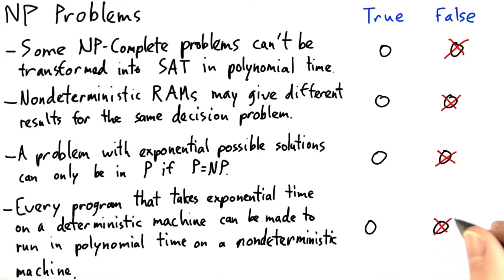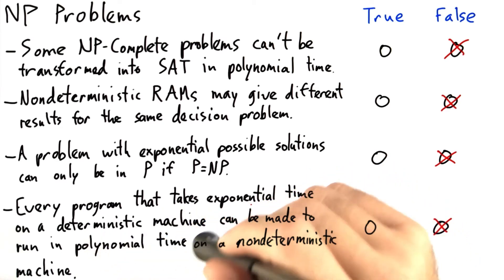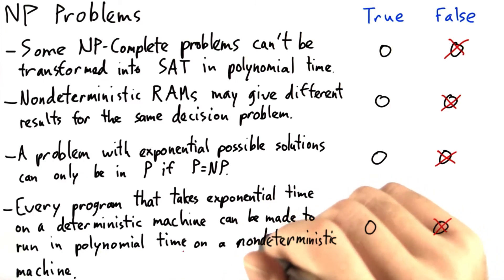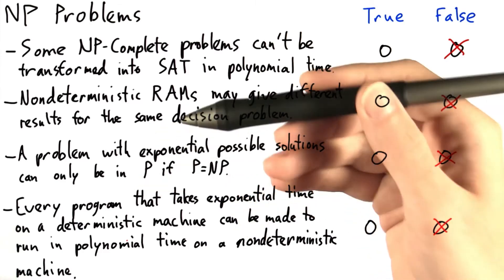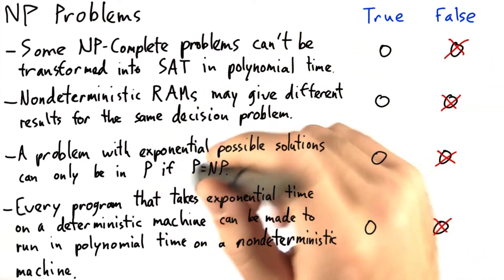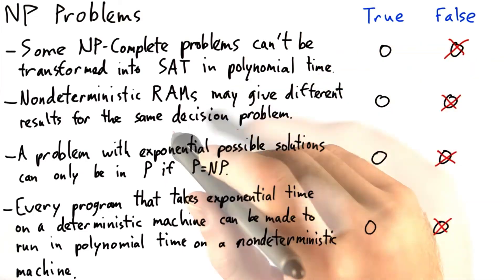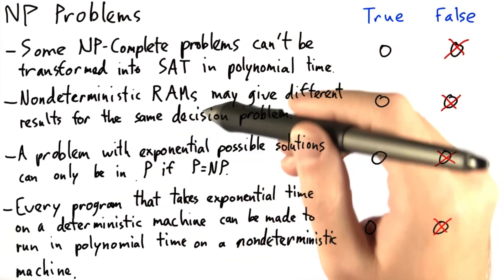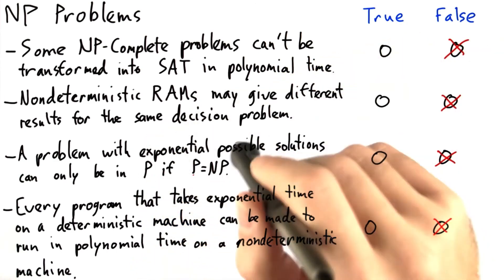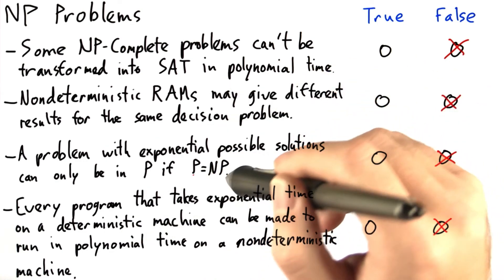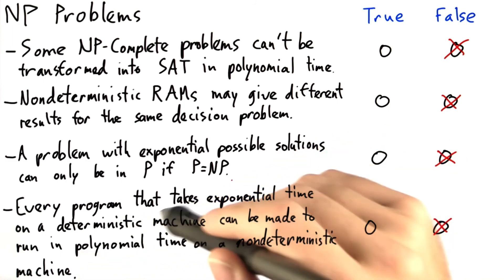The fourth problem, just like the other three, is also false. It is not true that every program that takes exponential time on a deterministic machine can be made to run in polynomial time on a non-deterministic machine. Good examples of this are any programs where the output size is exponential in the input size. For example, if you have a list of n elements and want to print out all possible sublists — of which there are exponentially many — then 'if better' doesn't actually buy you anything. You still have to explore the entire exponential space, so even a non-deterministic machine will have to take exponential time in that case.